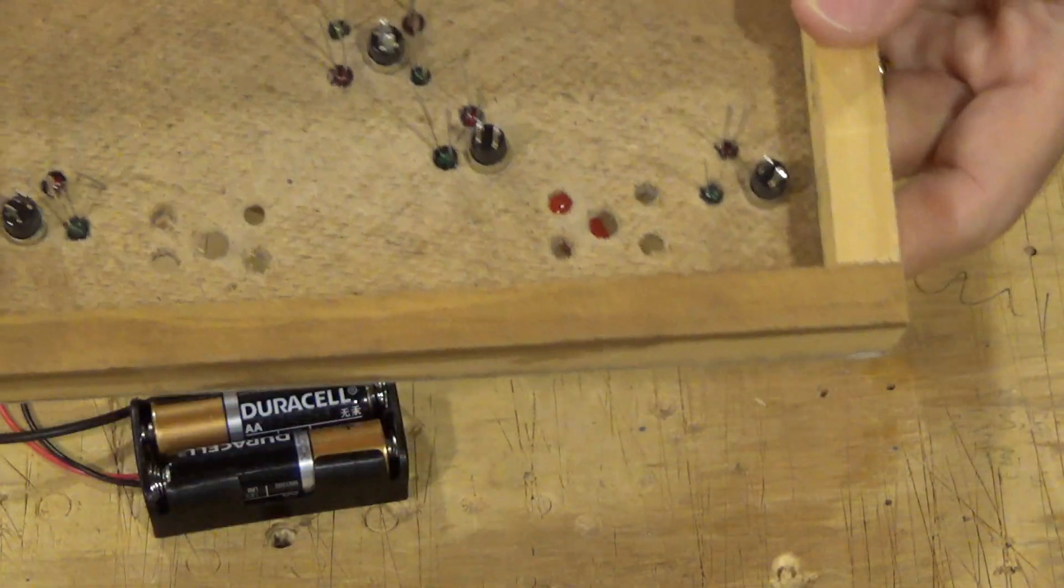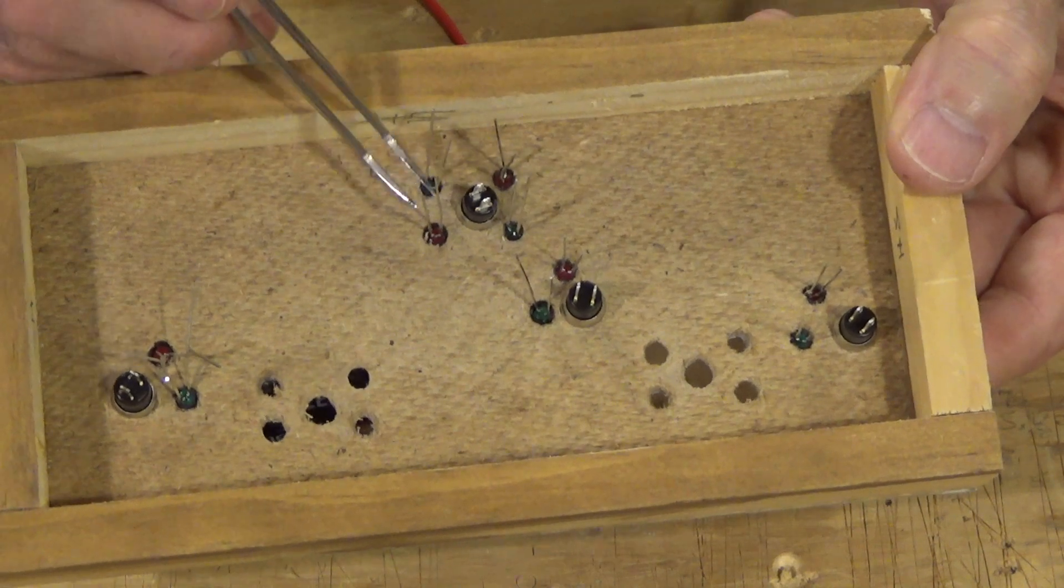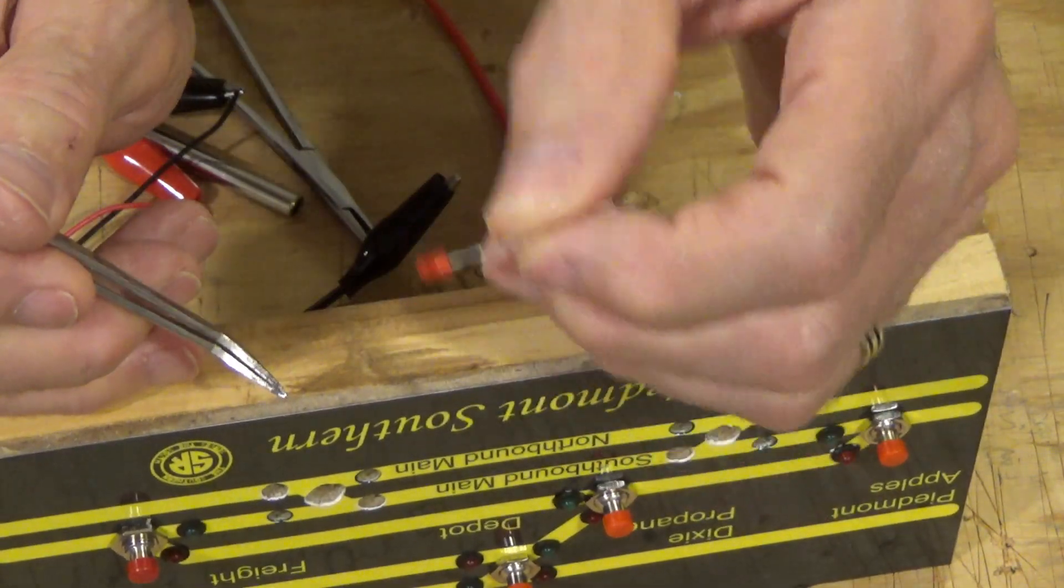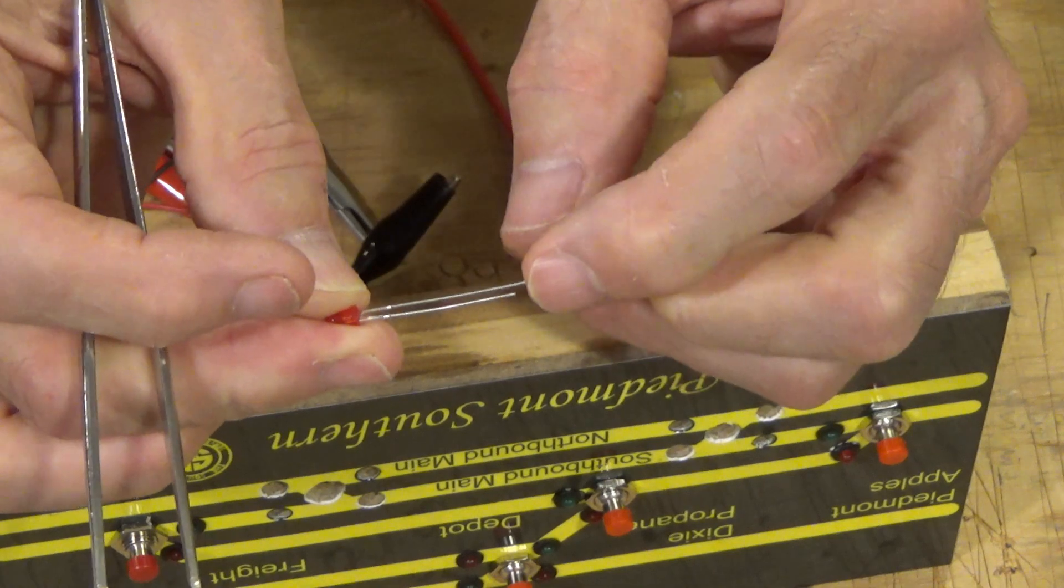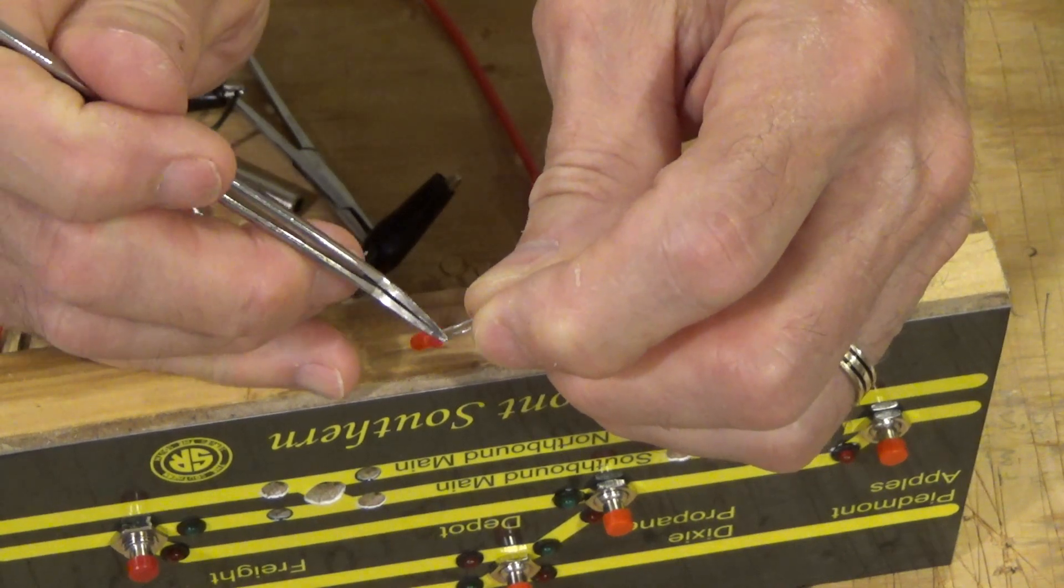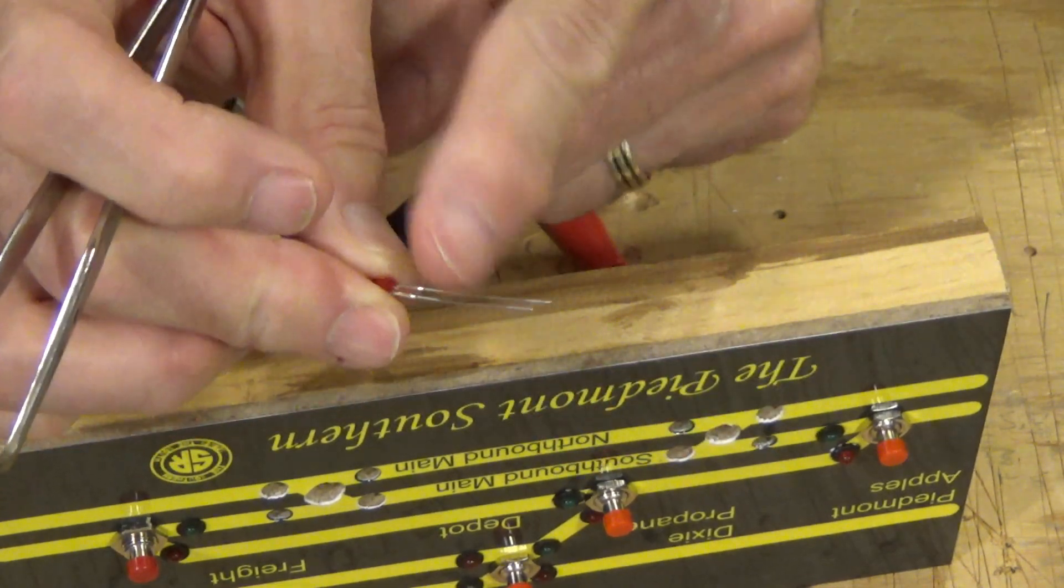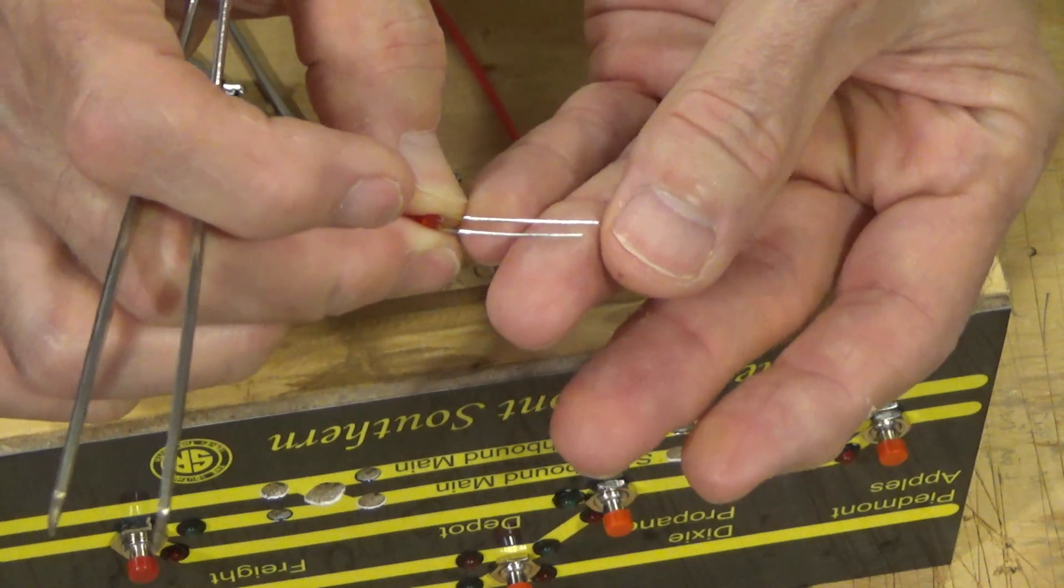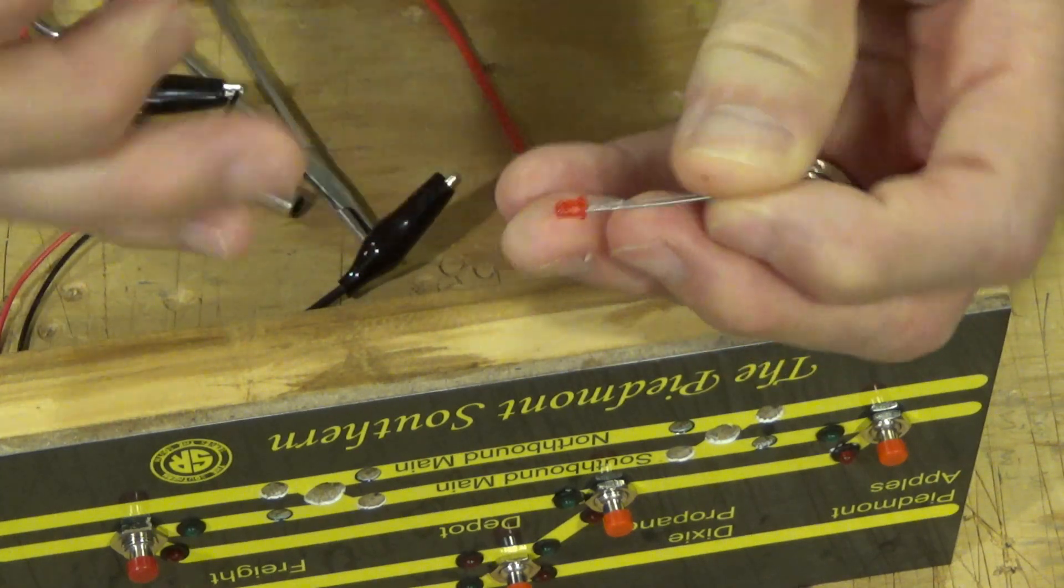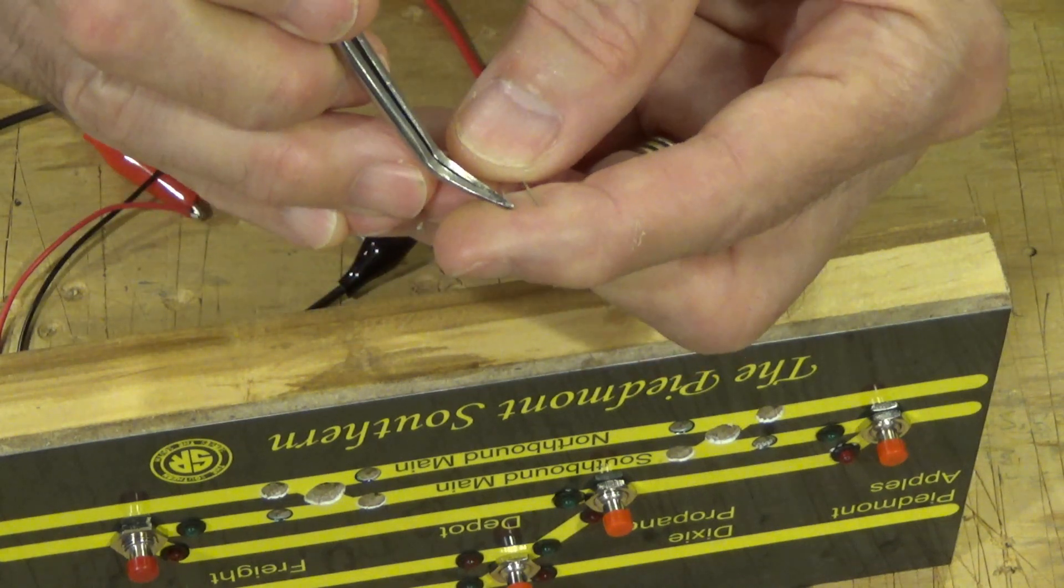Okay, one thing I want to point out. On LEDs, the long leg is positive and the shorter leg is negative. Also, you probably won't be able to see this. But, this is the short leg, this is the long leg. So, the negative leg, the short one, right up against it, there is a flat spot cast into the side of the LED case. So, that's another way to tell negative. Sometimes, you will get LEDs where the two legs are the same length. And, in those cases, you have to look for that flat spot indicating negative. And, the other leg will be positive. In this case, you can see the positive is longer than the negative.